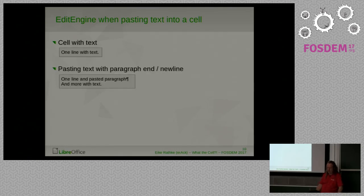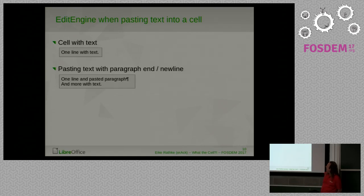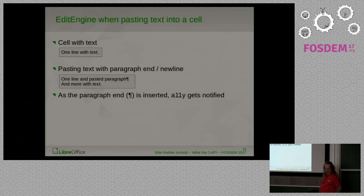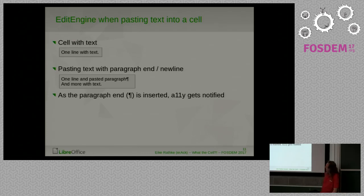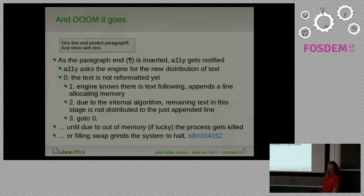When doing something similar — pasting text into a cell — starting with the same cell context, we paste a piece of text including a paragraph break previously copied from another cell. The same thing happens: when the paragraph end is inserted, accessibility gets notified, wakes up, and thinks it should ask the edit engine for the new distribution of the text.